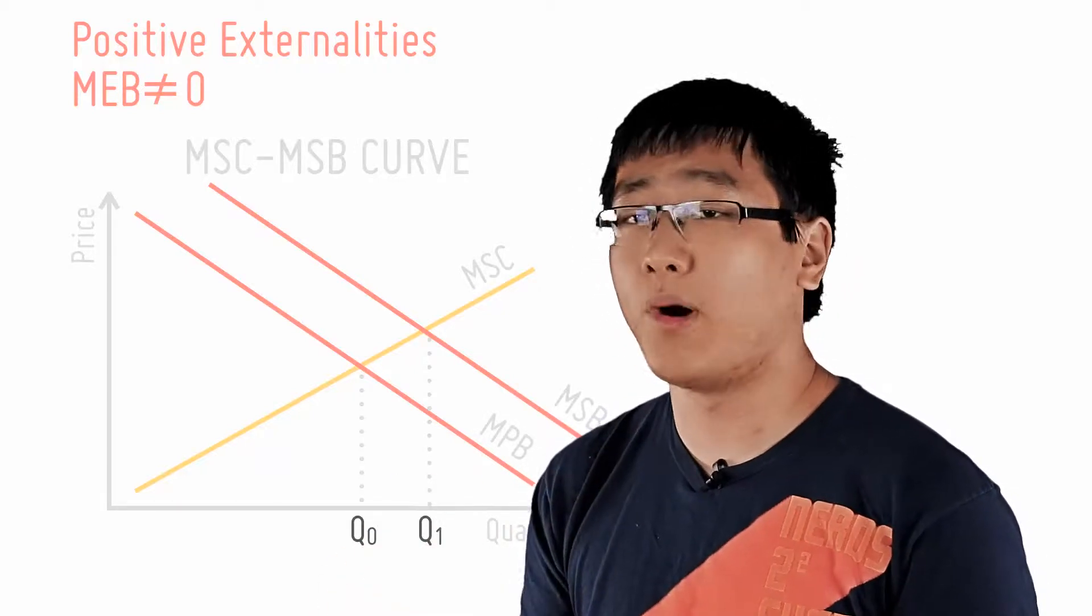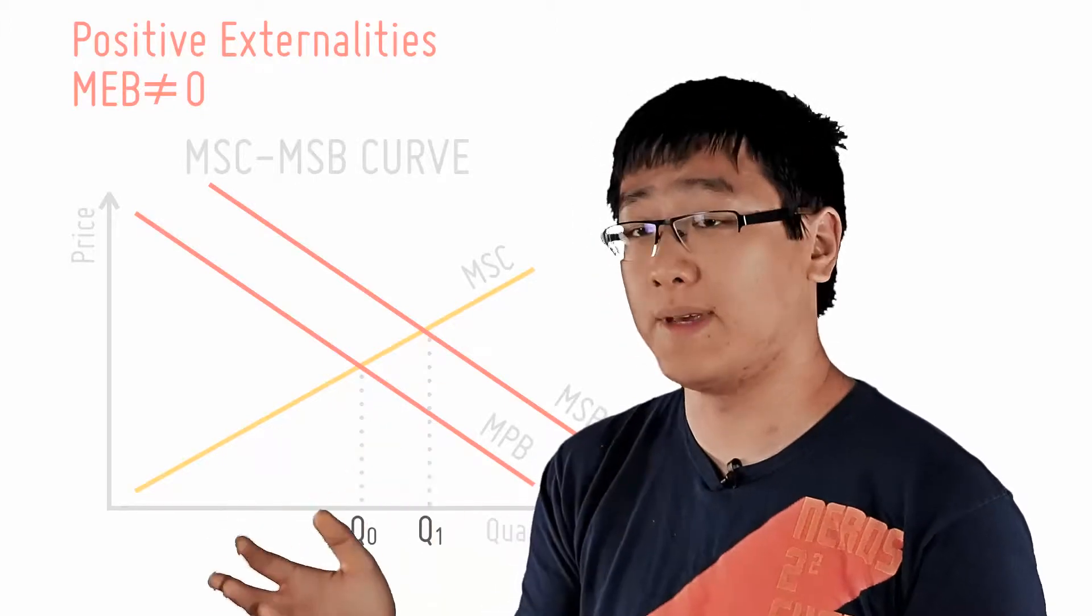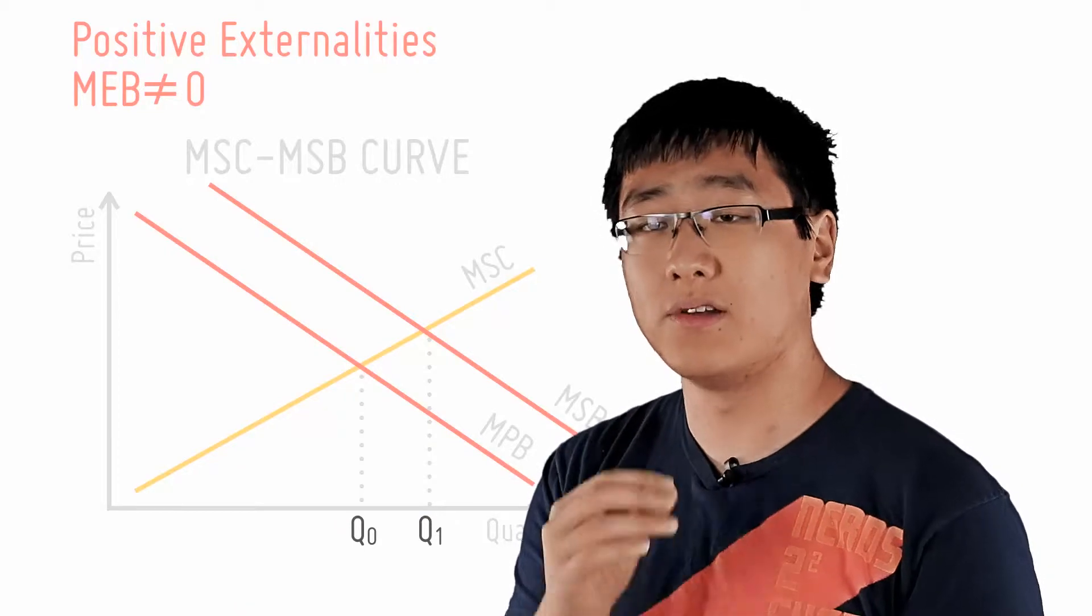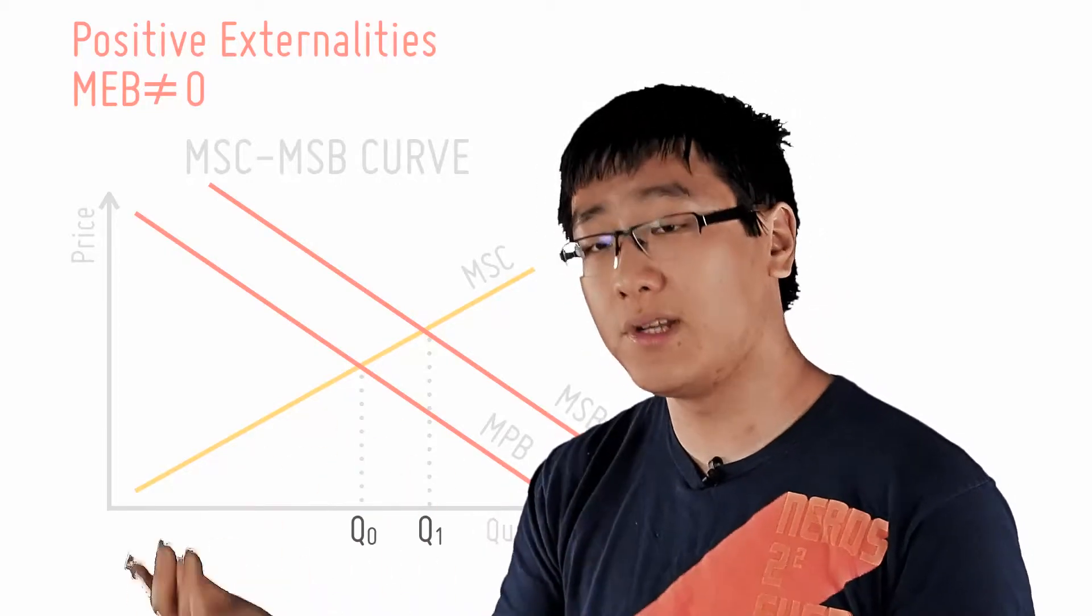However, the socially optimum point is at Q1 where MSB is equal to MSC. And hence society values the last unit of goods consumed as much as it costs to produce it.